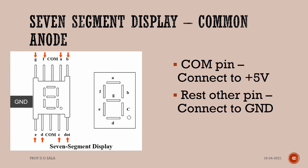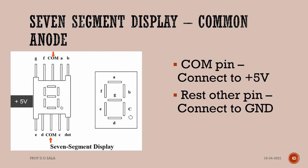In the common anode display, pins A, B, C, D, E, F, G, and dot must be connected to ground, and the two common pins must be connected to 5V.